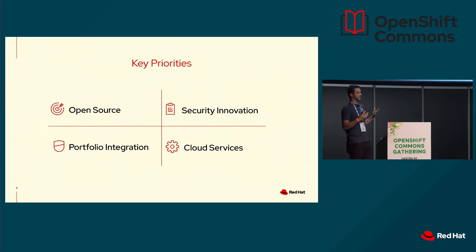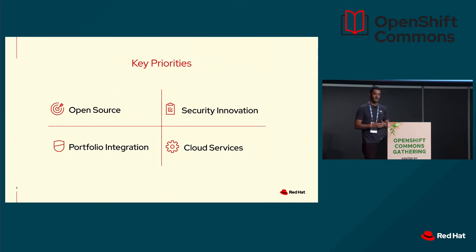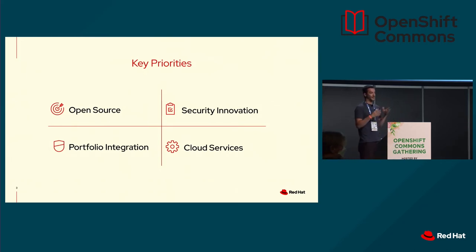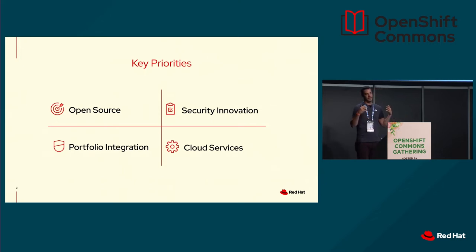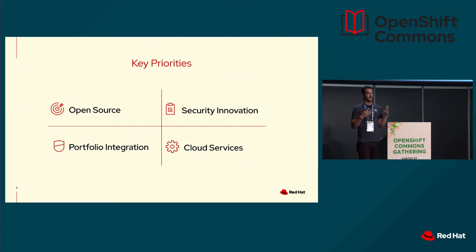From our perspective we have four key priorities that we've already been working on and will continue to work on in 2022. The first is open source. The second is security innovation — I don't think the Kubernetes security landscape is finished; I've been working on it for five years and there's probably another five years left. Third is portfolio integration — now that we're part of Red Hat, how can we all work together to provide a better solution? And finally, the ability to run a world-class cloud and managed service to allow everyone to use ACS as easily as possible.